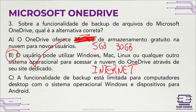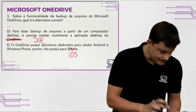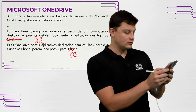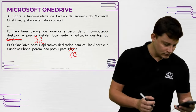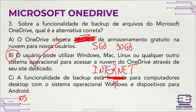Letra C diz que backup está limitado a computadores desktop — não, funciona também em celular e outros sistemas. Letra D diz que precisa instalar o aplicativo localmente — não, pode ser pelo site. Letra E diz que não tem app para iPhone — errado, eu mesmo uso no iPhone. Gabarito final: letra B.